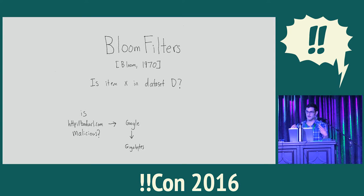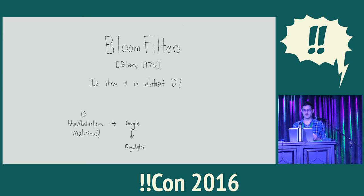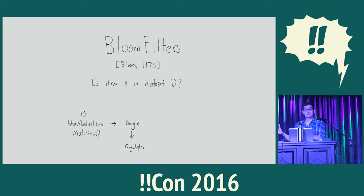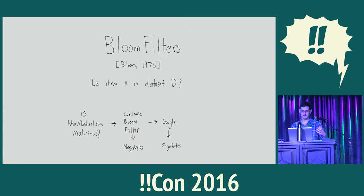Let's start with bloom filters. A bloom filter answers the question of whether a particular item X can be found in my data set D. If you've ever played around with Google Chrome, then you've interacted with a bloom filter. You want to go to some URL — you might go to badurl.com — and you want your browser to stop you if it's in some list of malicious URLs. Google has a few gigabytes worth of bad URLs in its data centers, but that's way too large to distribute to every Chrome installation. So Google has packaged those up into a bloom filter that takes up only a few tens of megabytes, and that's something you can actually distribute to every browser.